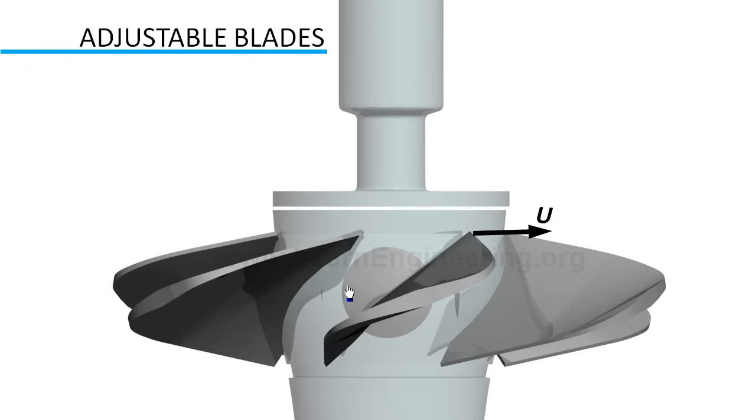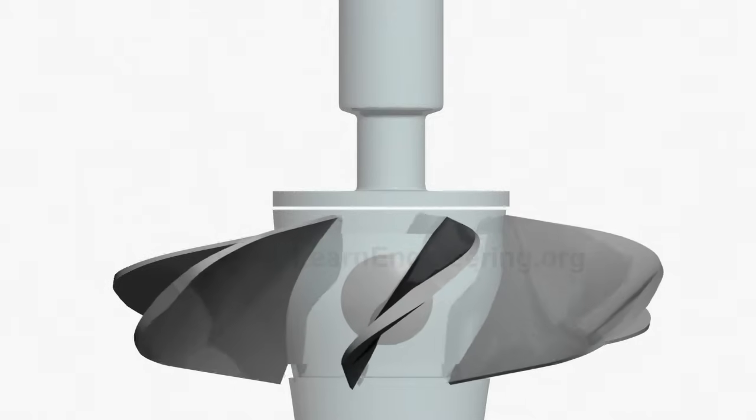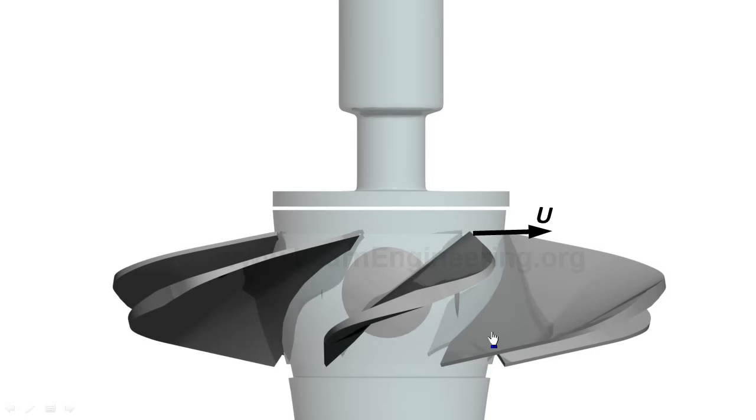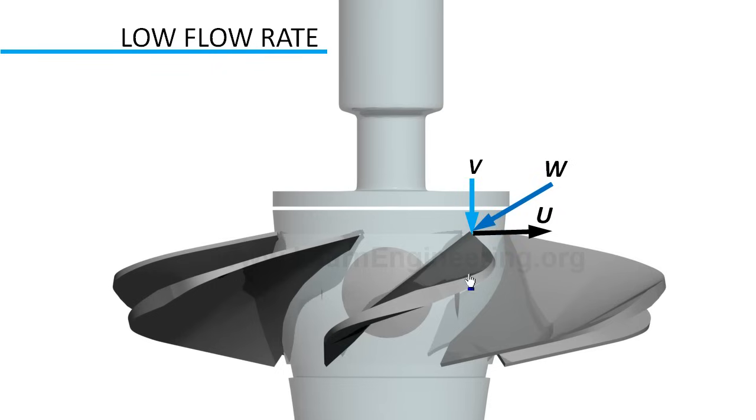When flow rate is high, relative velocity of flow will be more axial, so blades should pitch vertically. If flow rate is low, relative velocity of flow is more tangential, so blades are pitched in tangential direction.